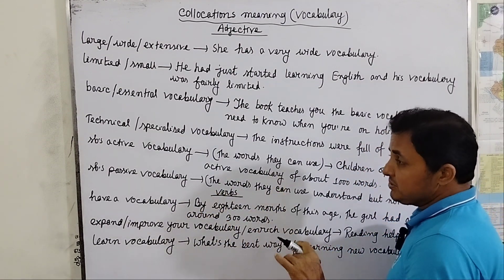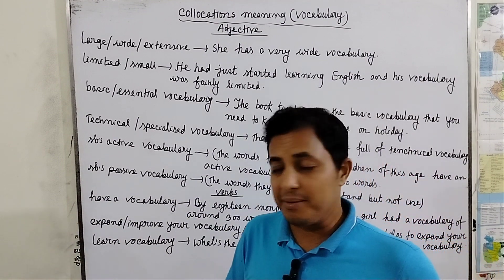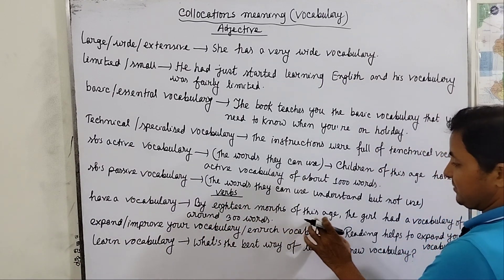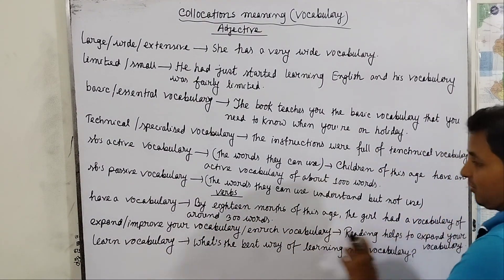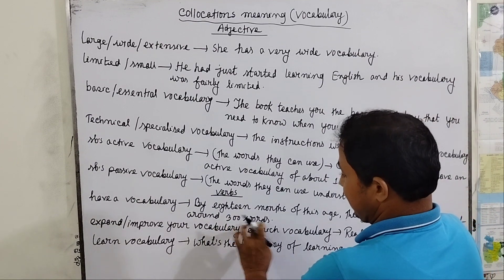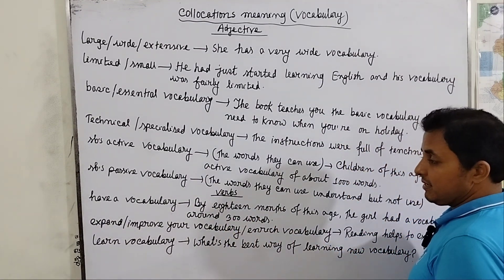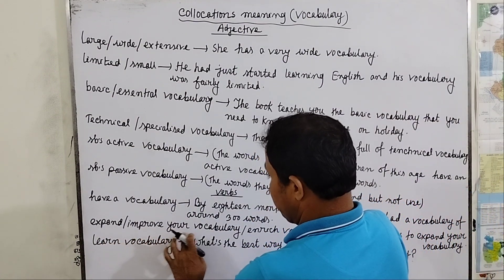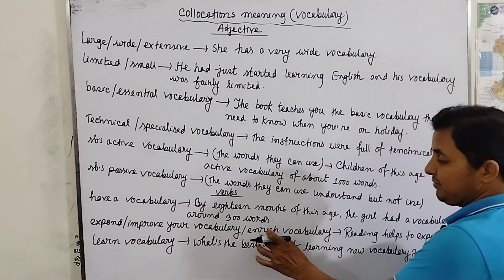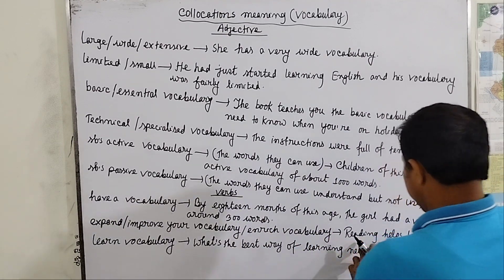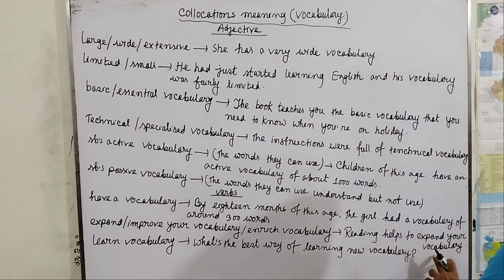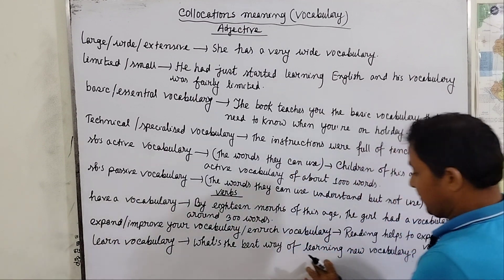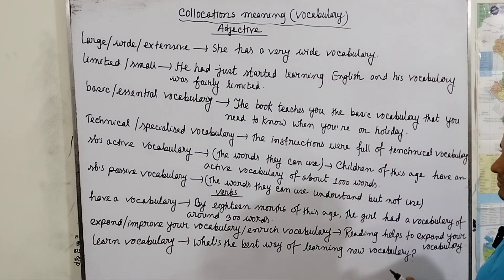If you want to use vocabulary as a verb, you can say: have a vocabulary — by 18 months of age a child had a vocabulary of around 3,300 words. You can also say: expand or improve your vocabulary, or enrich your vocabulary — enrich is mainly a formal way. For example: reading helps to expand your vocabulary. Learn vocabulary — what is the best way of learning new vocabulary?